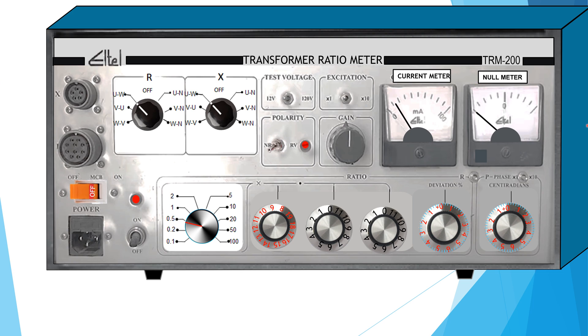By tuning this knob, the pointer of null meter is adjusted at zero mark to obtain a reading, and the reading related to the knob is taken as percentage deviation of TTR.